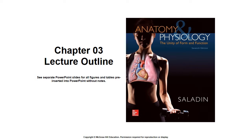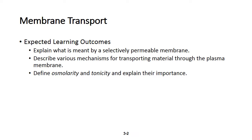This is part two of chapter three, cellular form and function. This lecture will be very short — I just want to talk about tonicity, osmosis, and diffusion. Membrane transport is important; you need to understand what a selectively permeable membrane is, as well as osmolarity and tonicity.